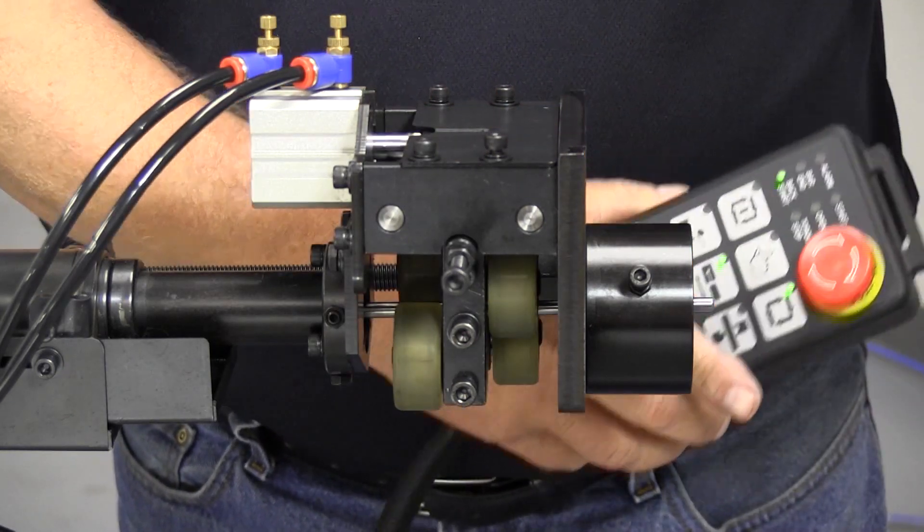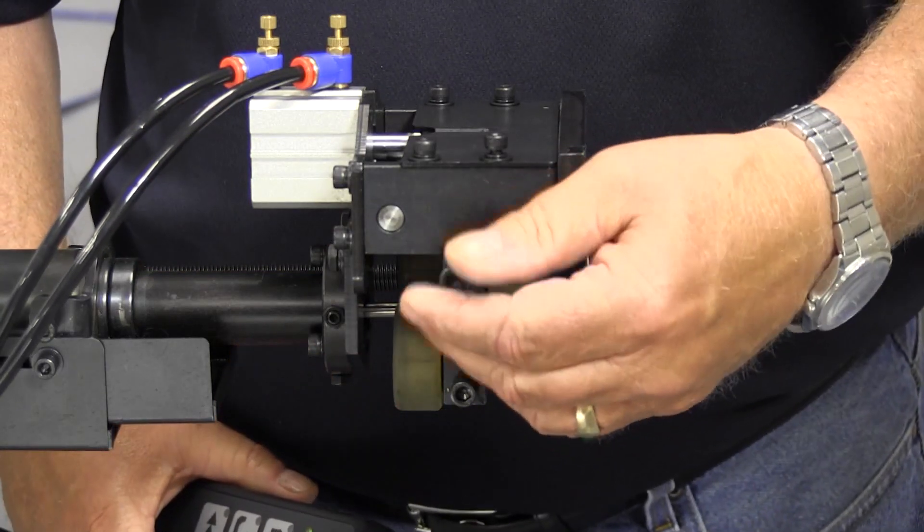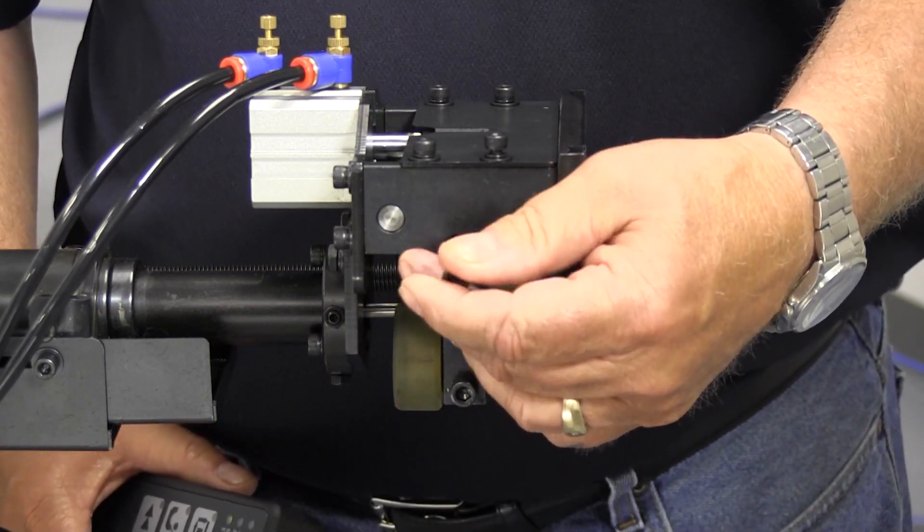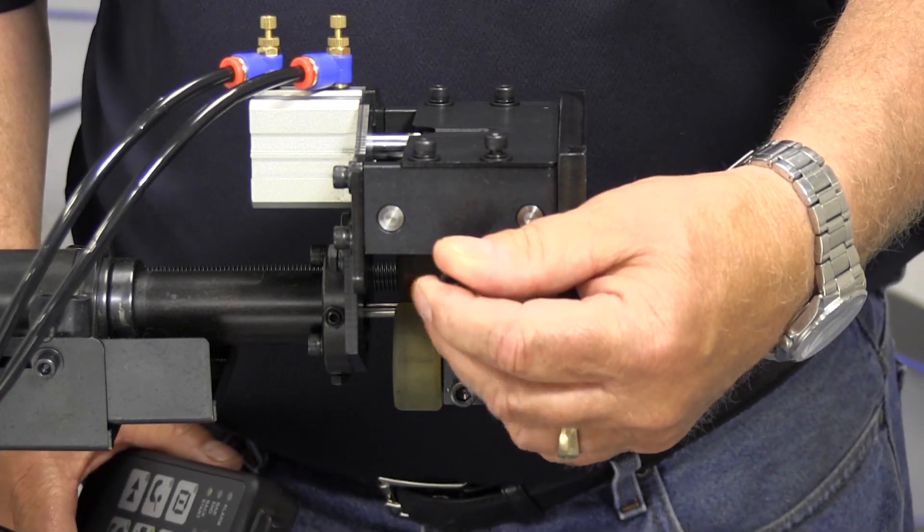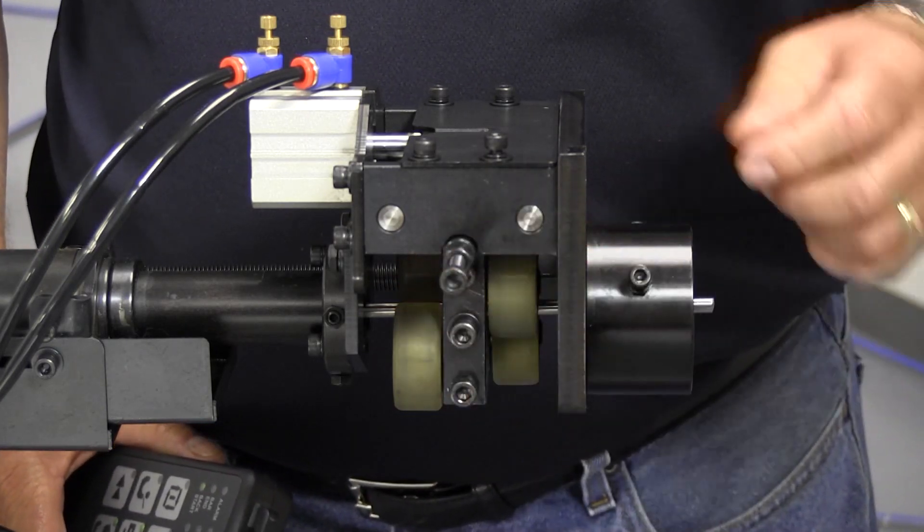At this point you will start your adjustment. If you go clockwise it adjusts for larger material, counterclockwise adjusts for smaller material. At this point you will adjust it out.